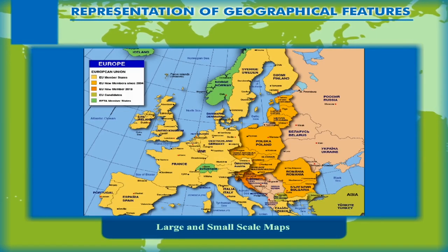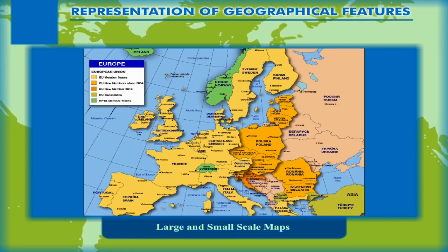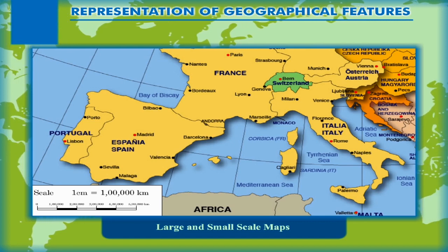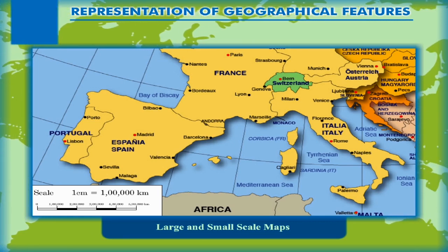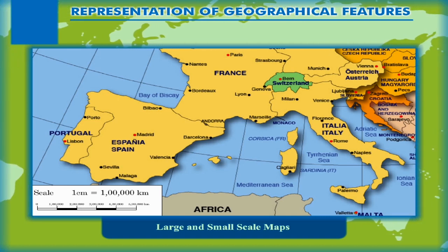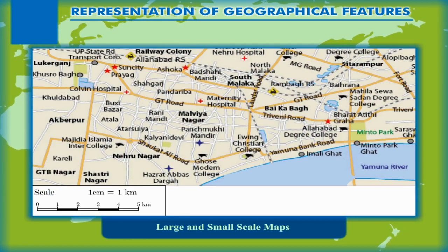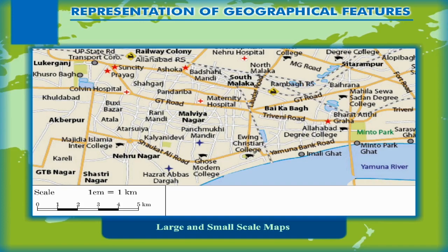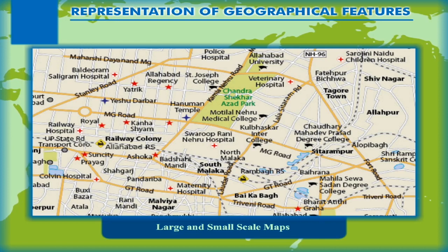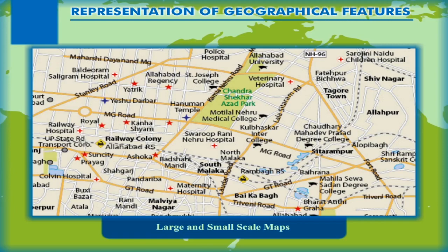When a large area is shown on paper, very few details may be marked. For example, a map of a continent where the scale is one centimeter equal to one lakh kilometers cannot show the details of a city — such a map is called a small scale map. On the other hand, a city map with a scale of one centimeter equal to one kilometer shows a locality or colony with detailed information like roads, schools, and hospitals.